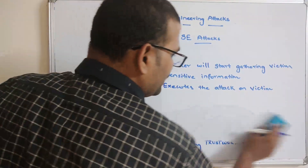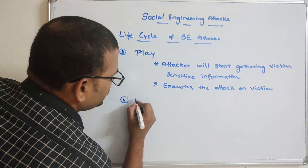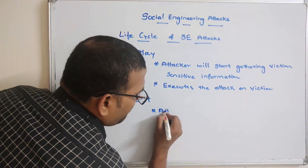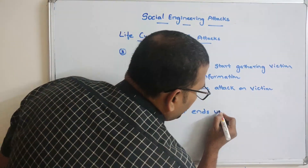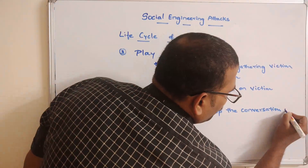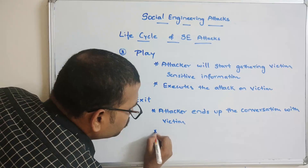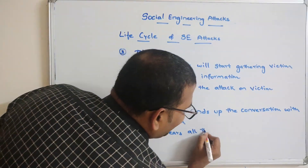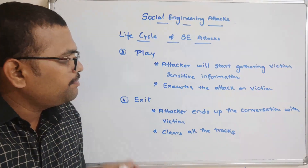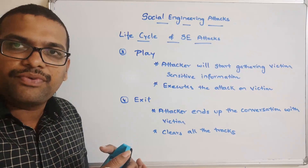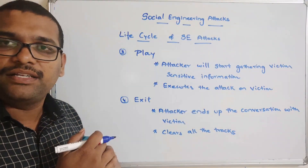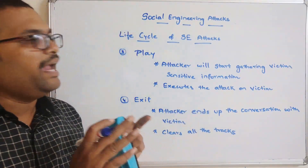The last phase, the fourth one, is the Exit phase. In this phase, the attacker ends the conversation with the victim and clears all the tracks — meaning all the paths through which the attacker communicated with and took information from the victim are closed. With this phase, the attack is completed.